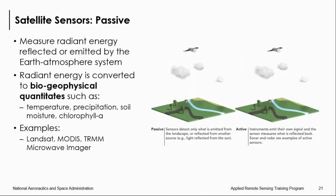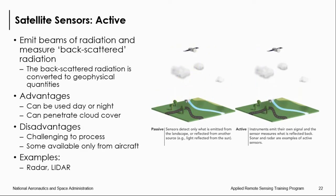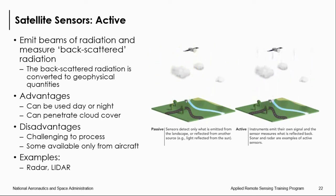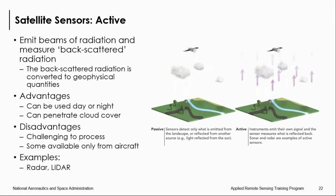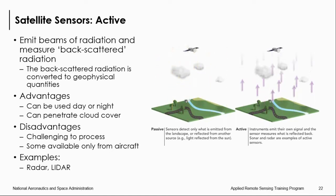Two types of sensors exist: passive and active. A passive system needs an external energy source — in most cases, the sun — and detects reflected and emitted energy from objects on the Earth. An active sensor system provides its own energy source, such as radar. The radar sensor sends out sound waves and records the reflection waves coming back from the surface. Since they don't need the sun, active sensors can be used day or night and can penetrate cloud cover — a major advantage. The disadvantage is that they are very challenging to process and interpret. Radar and LIDAR sensors are also typically used to acquire topographic information.